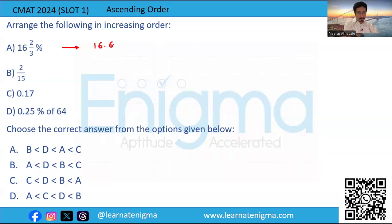Option c is a decimal, so to convert it into percentage we multiply by 100, which gives 17 percentage. Since c (17%) is greater than a (16.66%), option c is eliminated from being the smallest.